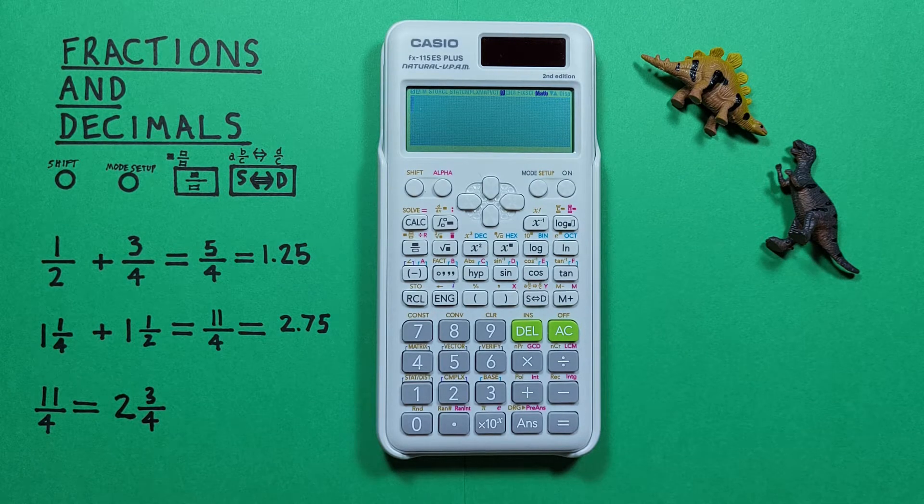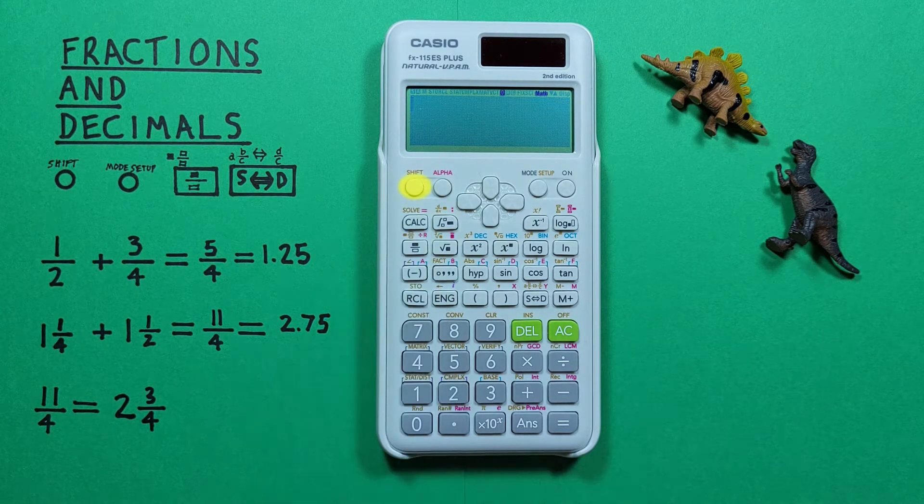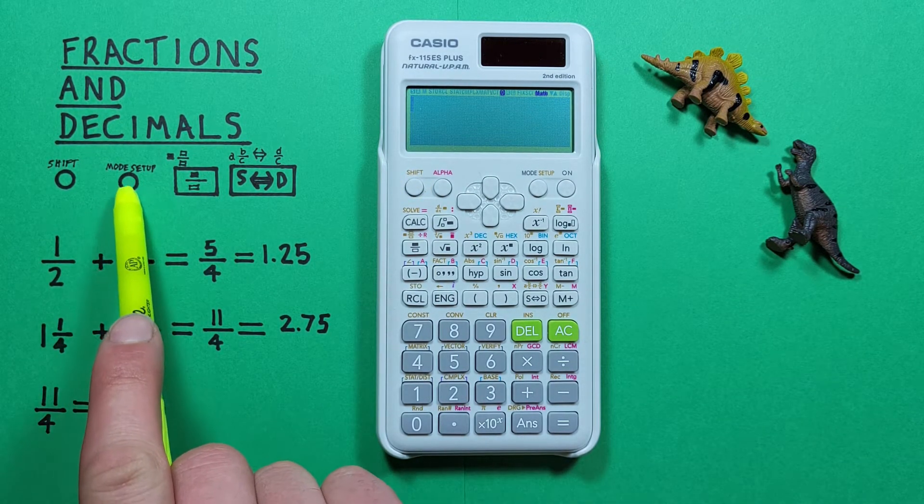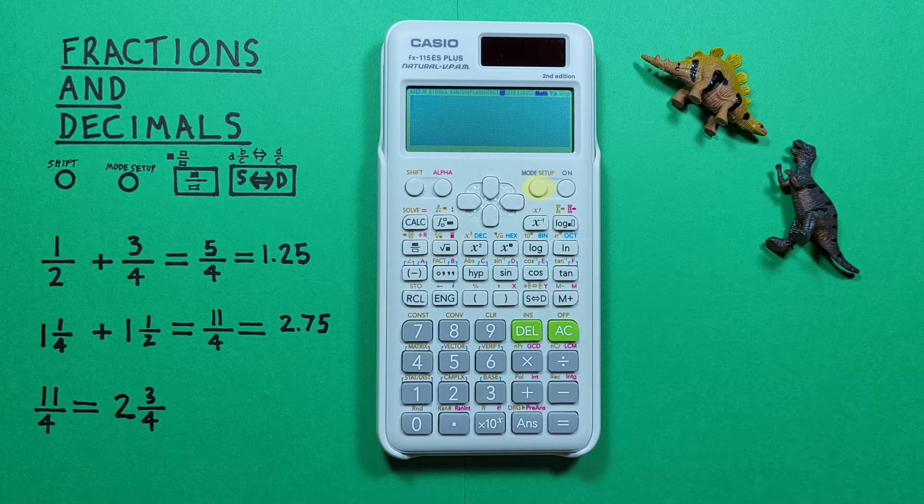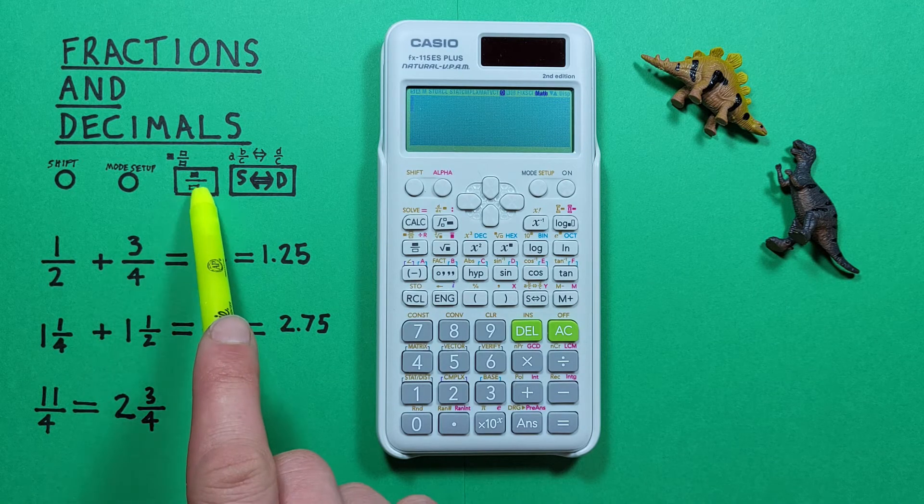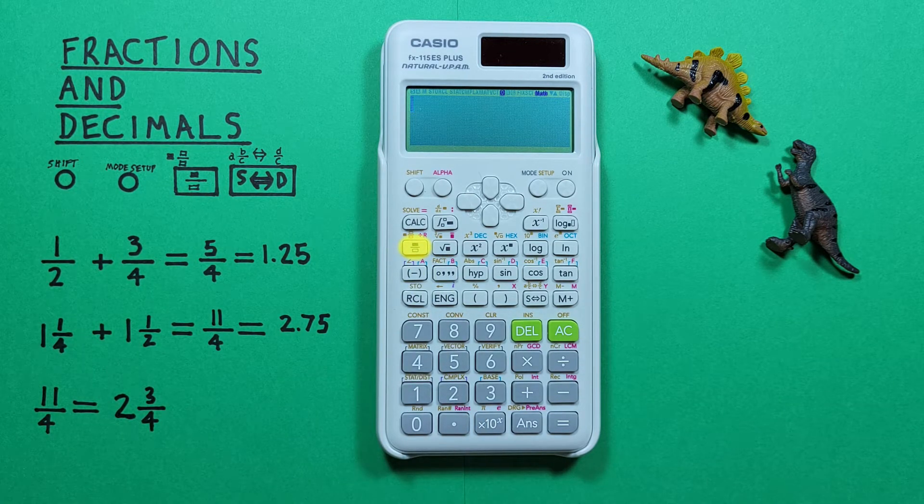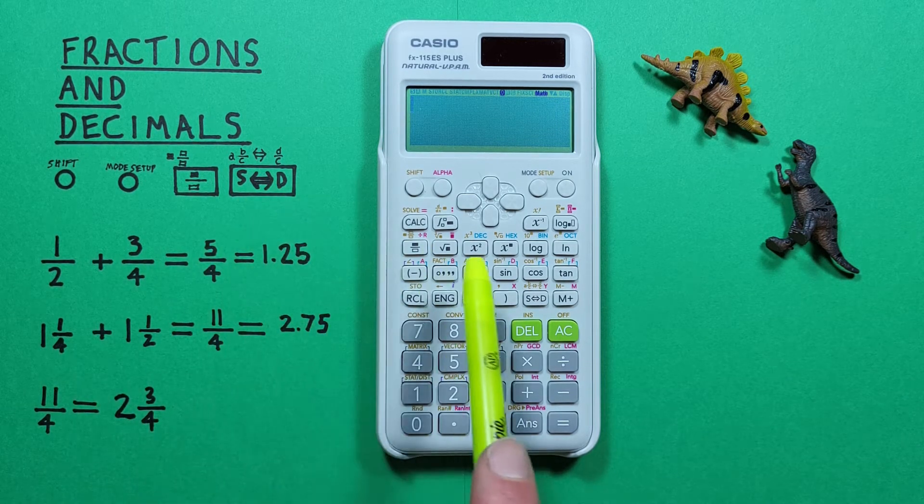To do that we'll use the shift key that looks like this, located here. The mode setup key that looks like this, located here. The fraction key that looks like this, located here. And the S to D or conversion key that looks like this, located here.